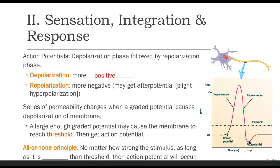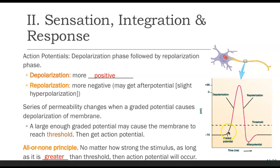Eventually, a sodium-potassium pump puts the ions in the right place and brings us back to a resting membrane potential. We will have permeability changes that cause those graded potentials in order to get depolarization to take place. We have a threshold set in place to fit our all-or-none principle. No matter how strong the stimulus, as long as it is greater than the threshold, we are going to get that action potential to go through. But if we are less than that threshold, then we get none — the action potential will not take place at all.